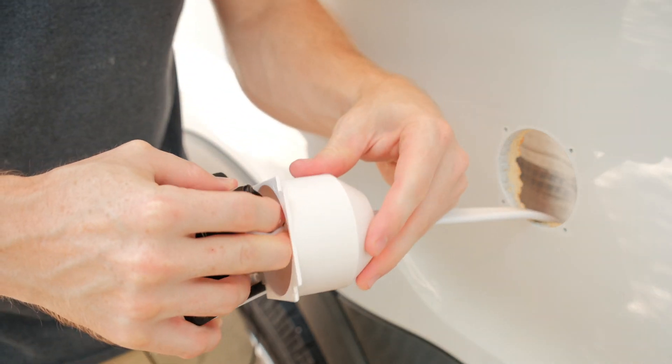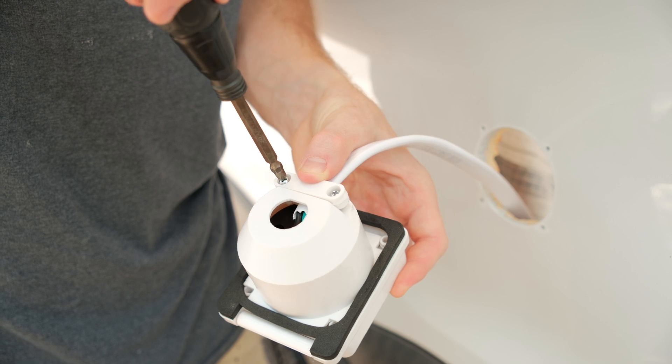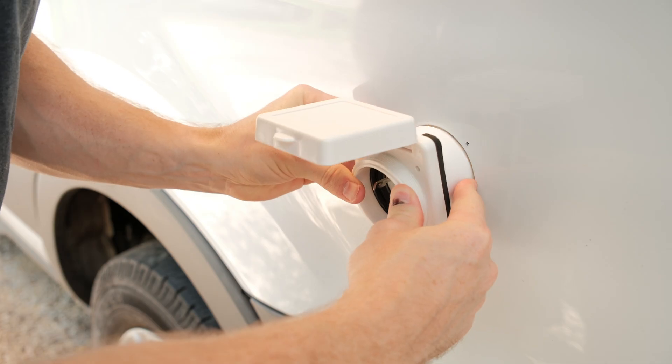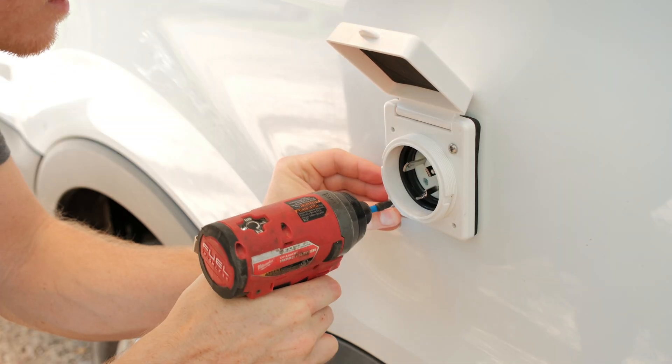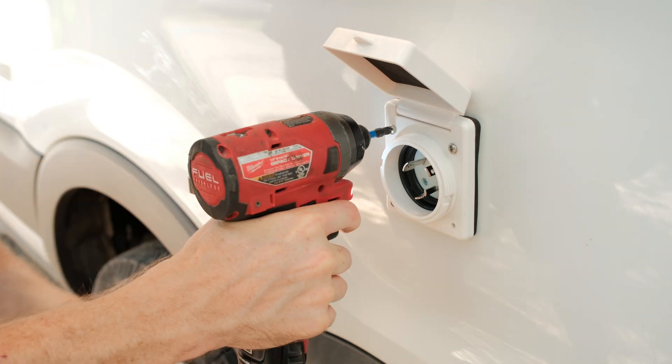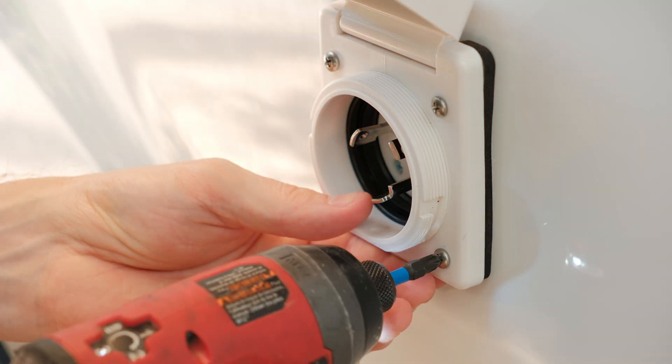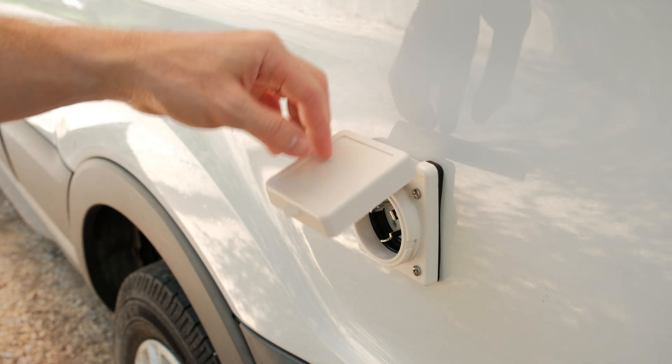Now we can put the rear housing onto the back of the shore power inlet and put the wire strain relief clamp back in place and screw it down. Then you can place the whole assembly into the hole in the van and screw it into place. I'm using a stainless steel screw that's about an inch long for this. In order to prevent stripping the screws in the metal, I only use the driver to set them lightly, and then I finish tightening them by hand. And that's it for the port!